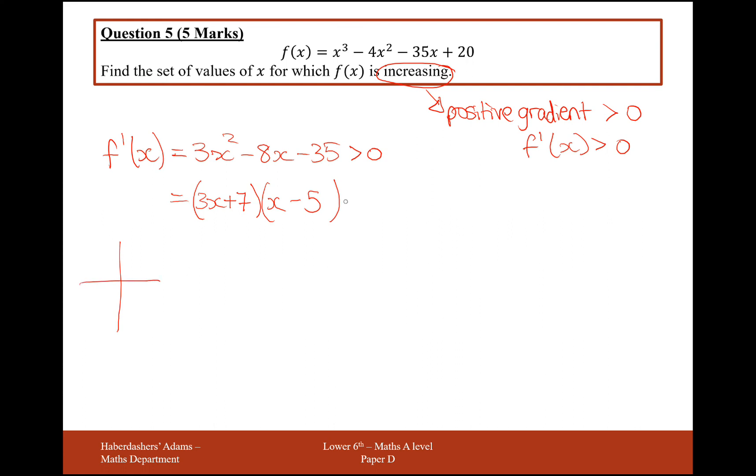So let's think about what region we're looking for here. We have a solution of x equals 5 and a solution of x is equal to minus 7 over 3. Our graph is going to roughly look something like this, and we want for when the graph is on top of the x-axis. So our solution here is going to be x has to be less than minus 7 over 3 or x is greater than 5.